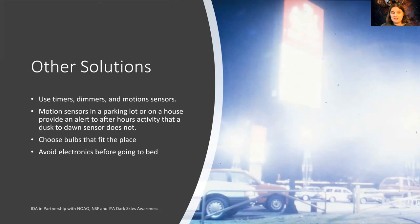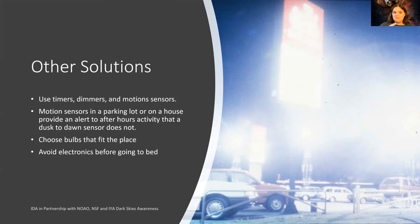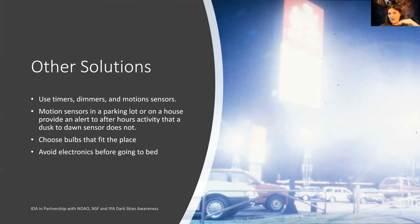Here are some other solutions to consider. Use timers, dimmers, or motion sensors. Many people have motion-sensor detectors on their front doors or garages — make sure they're not overly bright and that they're shielded downward so they don't shine into your neighbor's porch or bedroom. Also consider daylight-nighttime sensors, similar to a solar cell. Some houses gradually raise their lights as the sun dims and lower them as the sun rises, saving on electricity.